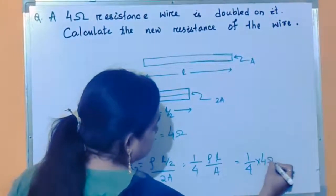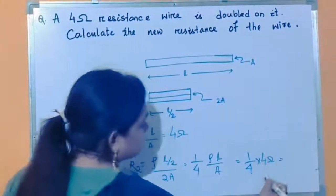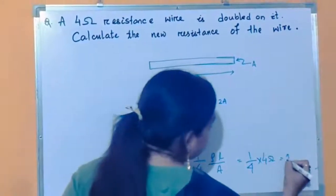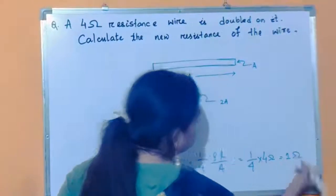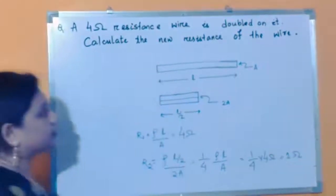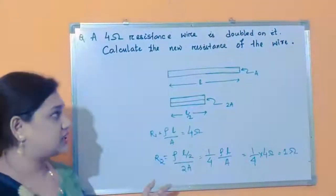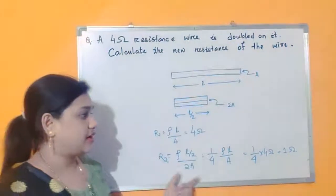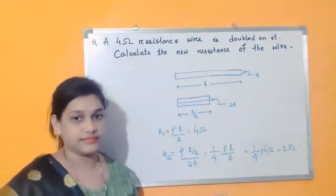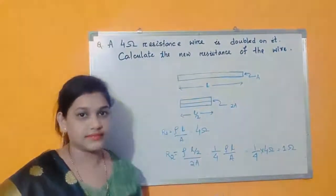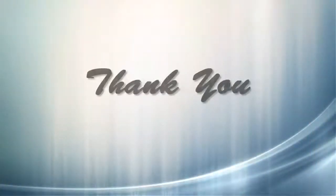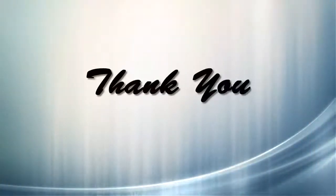So this is nothing but 1 ohm. The final resistance, or the new resistance of the wire, becomes 1 ohm. This is our answer.